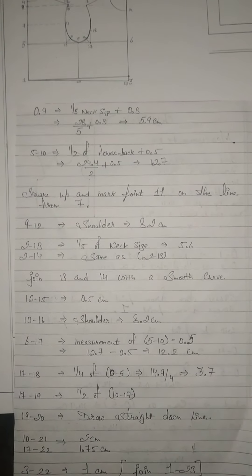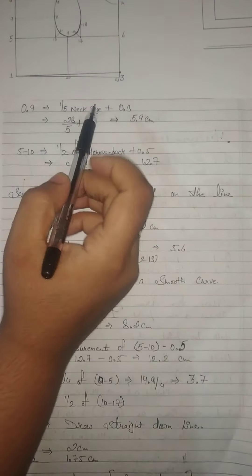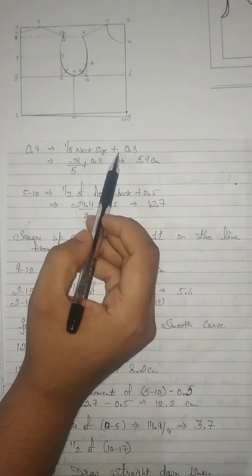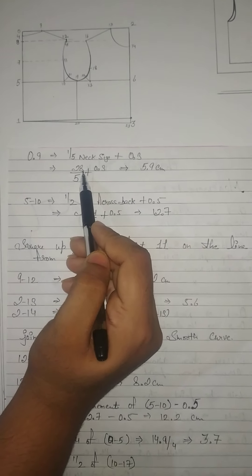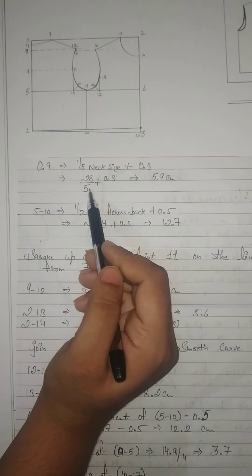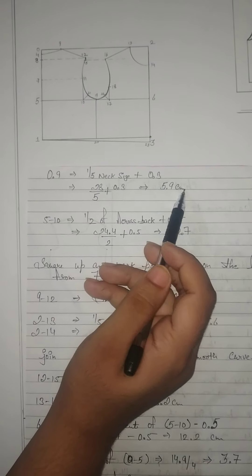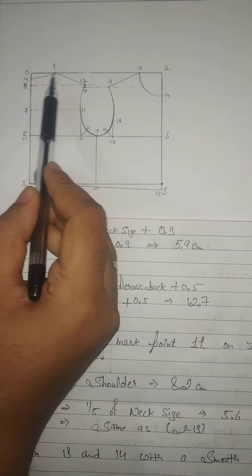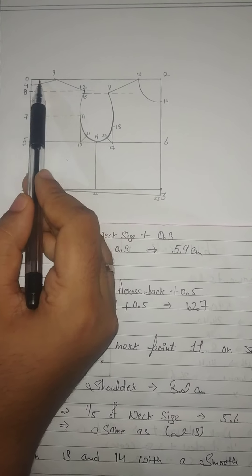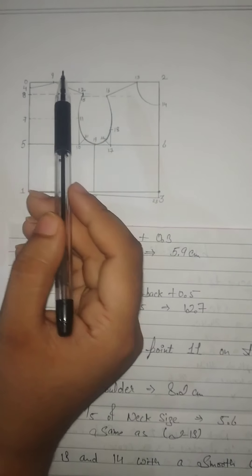After that, mark 0 to 9. Point 0 to 9 is one-fifth of your neck size plus 0.3. Your neck size is 28 cm; 28 divided by 5 plus 0.3 equals 5.9 cm. This is your neck width — how broad you want the neck. Mark 5.9 cm with your 1/4th scale.